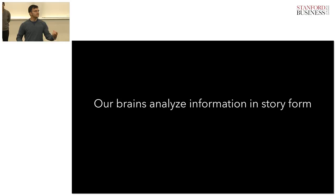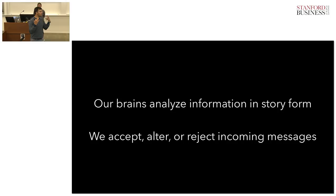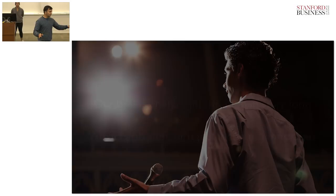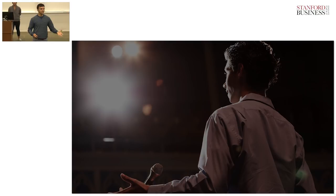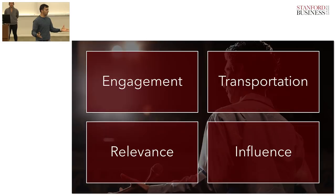In summary, we talked about three things today. First, our brain analyzes every message in story form — if we cannot connect with the story, our message does not pass through. Second, based on the make sense mandate in our brain, our message can be accepted, altered, or completely rejected by our audience. Third, we can craft good stories if we follow a structure: stay engaged, transport our audience, stay relevant, and influence their attitude, belief, and knowledge. We can craft excellent stories that influence our audience.